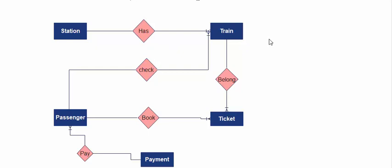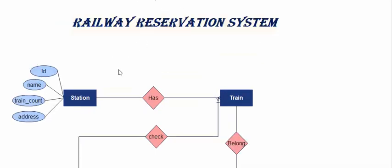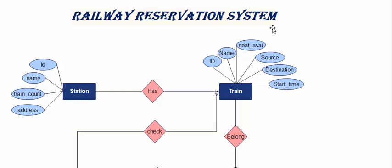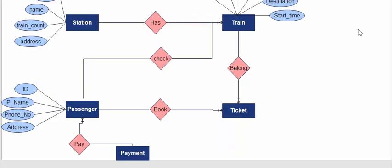Now let's come to the attributes of these entities. The station has: ID, name, train count, and address. The train has: ID, name, seat availability, source, destination, and start time.